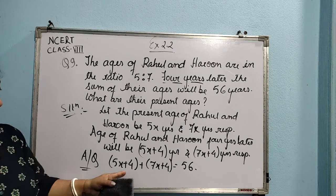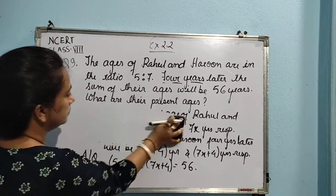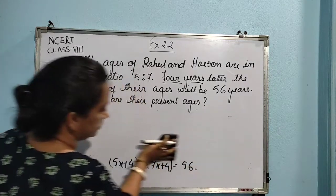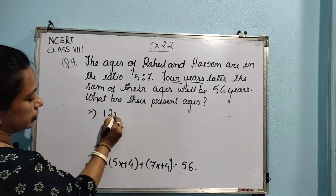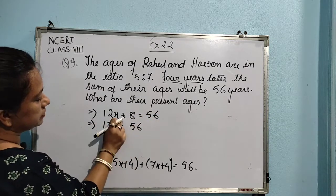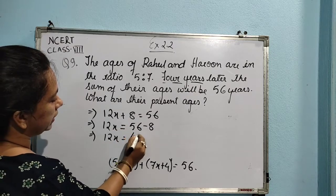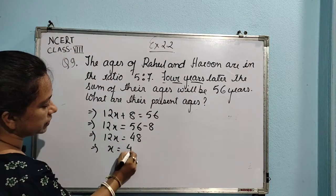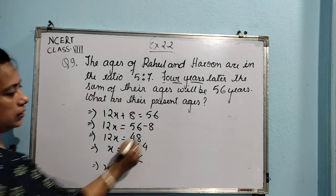You can pause the video and write it down. Solving: 5x plus 7x gives 12x, and 4 plus 4 gives 8, so 12x plus 8 equals 56. Then 12x equals 56 minus 8, which is 48. Therefore x equals 48 divided by 12, so x equals 4.